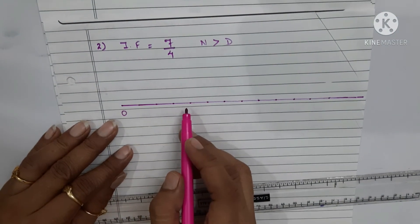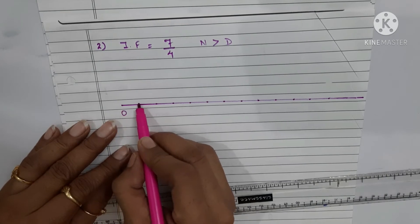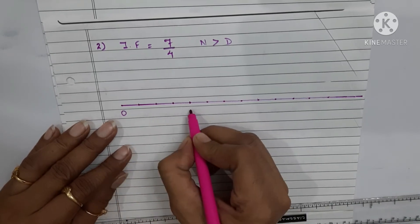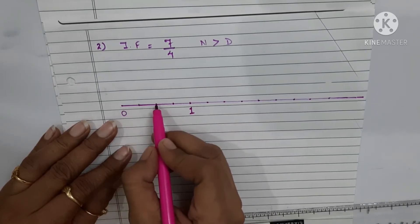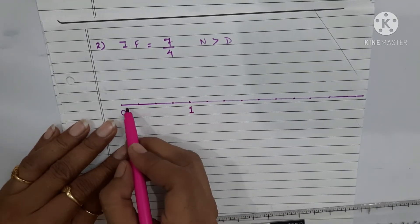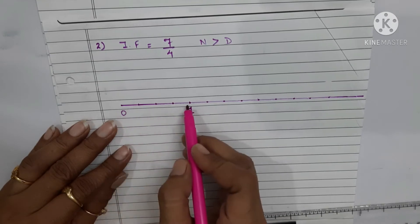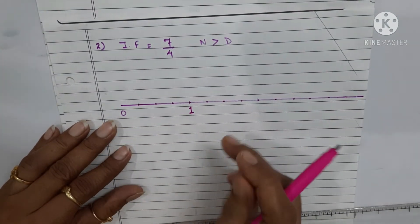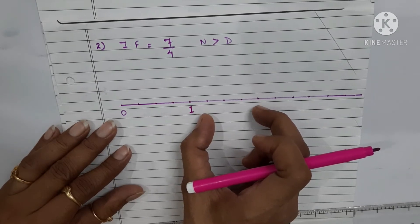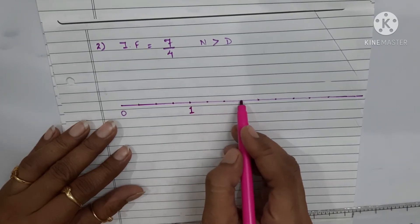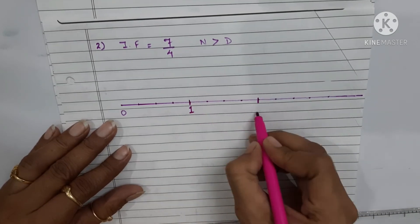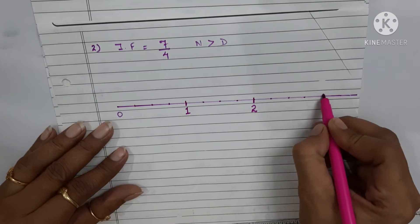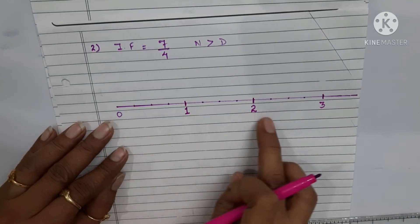Since the denominator is 4, each whole unit must be divided into four equal parts. So from zero, we count four equal parts: one, two, three, four — this completes the first unit at 1. Then again four more parts: one, two, three, four — this gives us the second unit at 2. And again four more parts for the third unit.